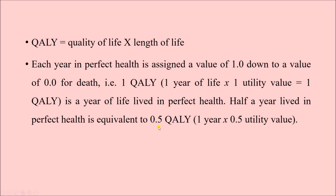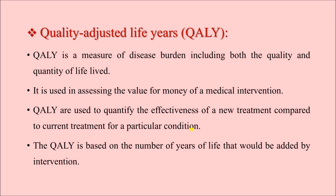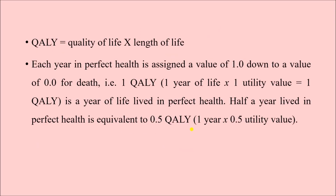A value of 0.5 QALY can mean two things: one year of life spent at a utility factor of 0.5 — meaning the quality of life is somewhere between perfect and worst — or half a year of life lived in perfect health (0.5 × 1 = 0.5). To summarize QALY: by different medical interventions life can be extended, and we consider the quality of that extended life. We then compare interventions using the formula utility factor (ranging from one to zero) multiplied by length of life extended.